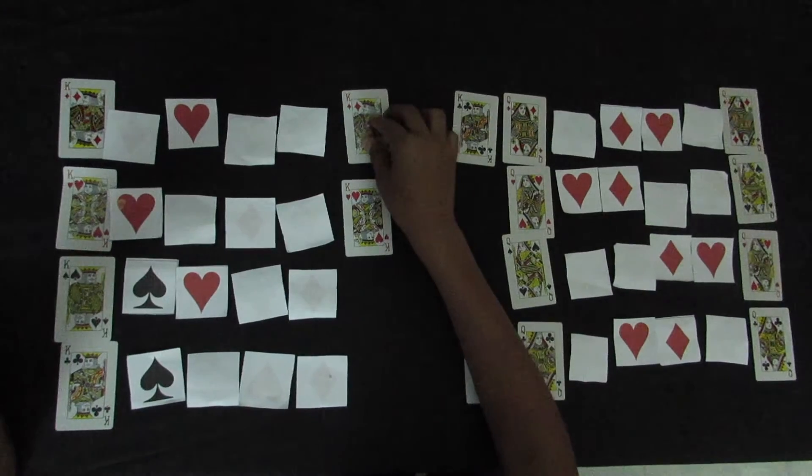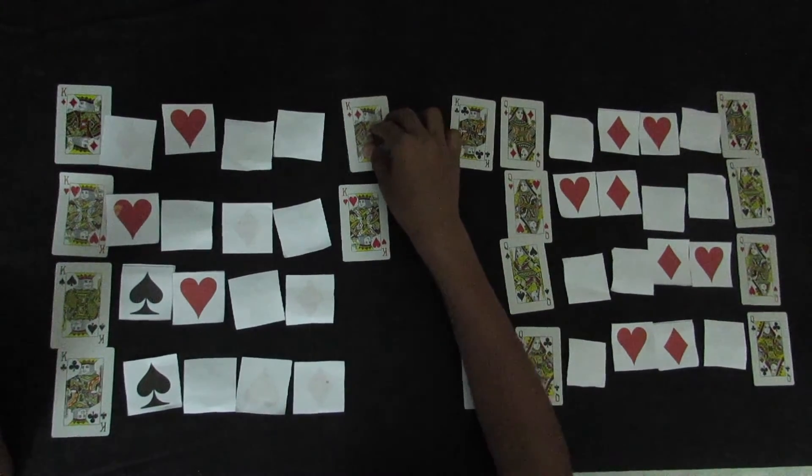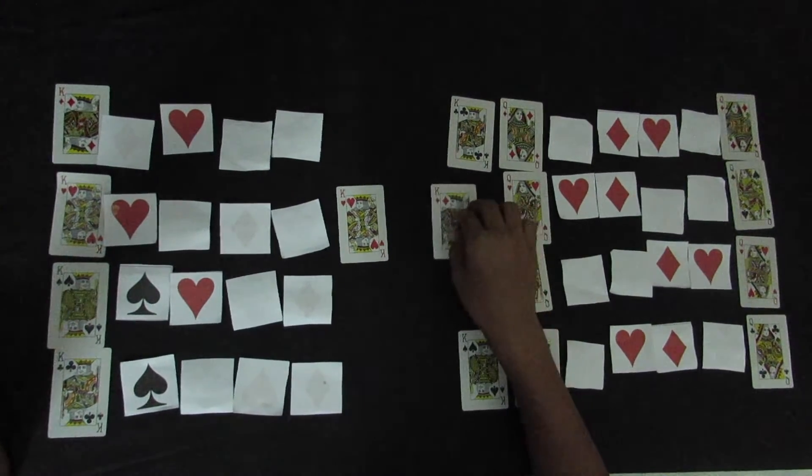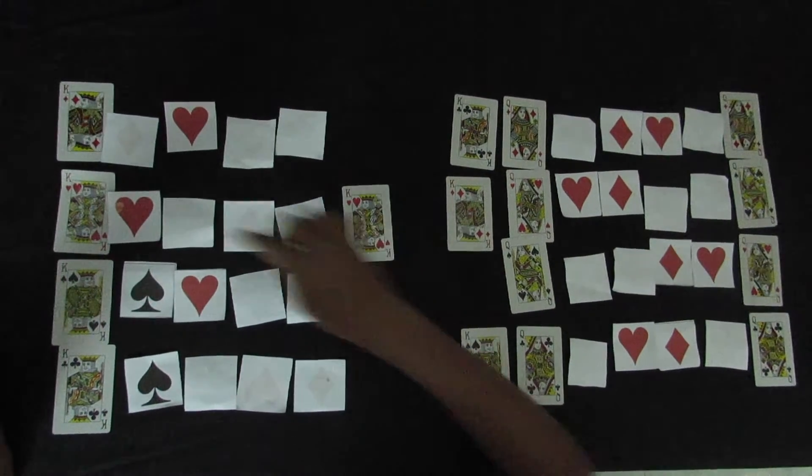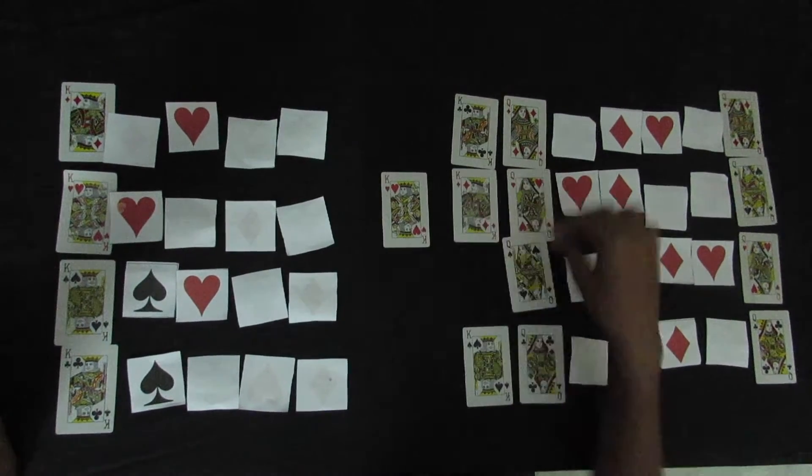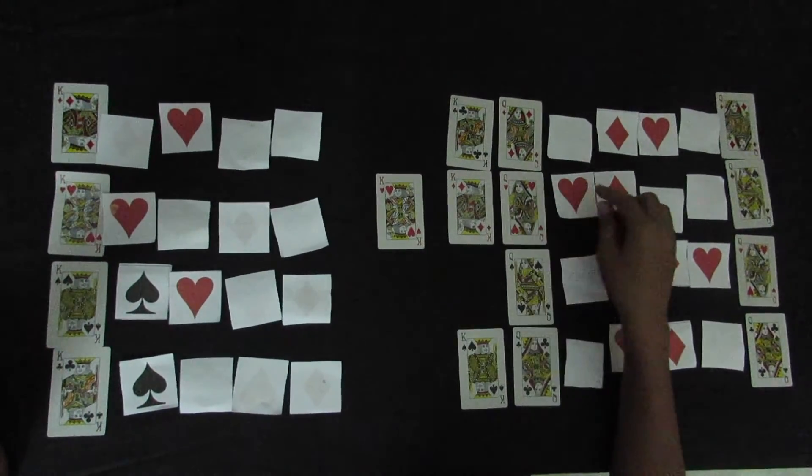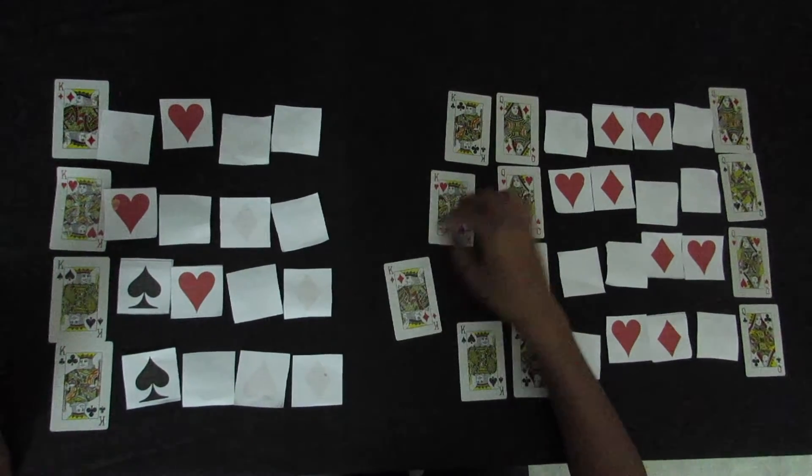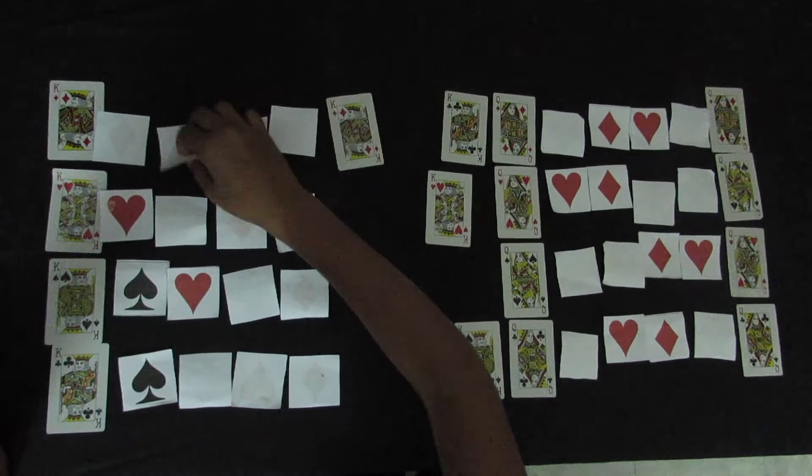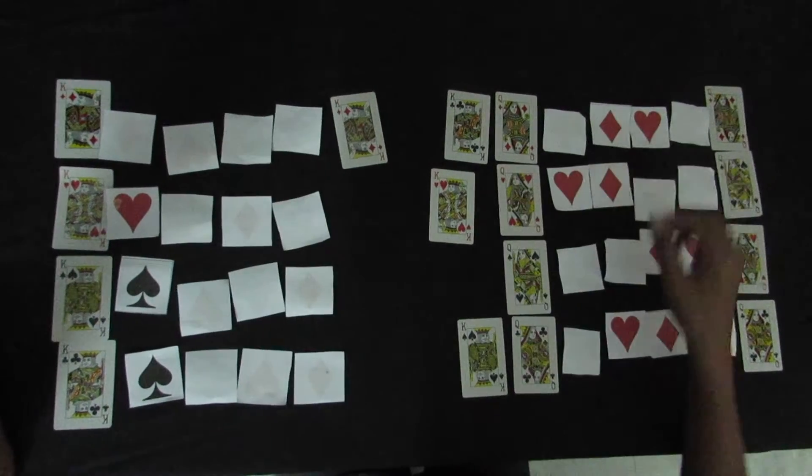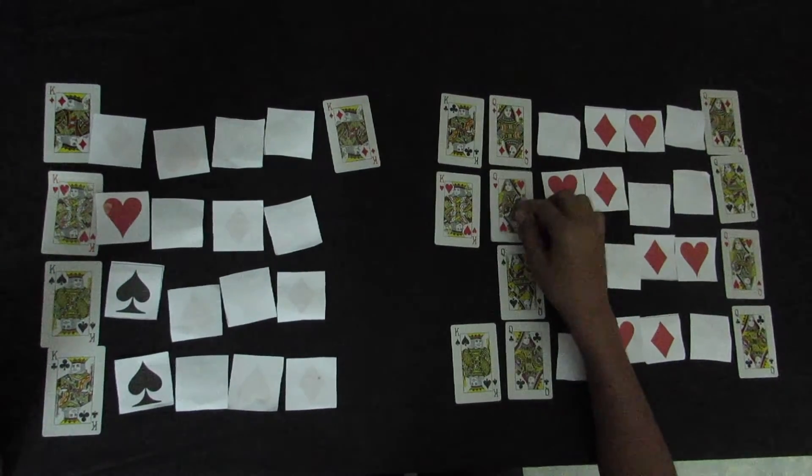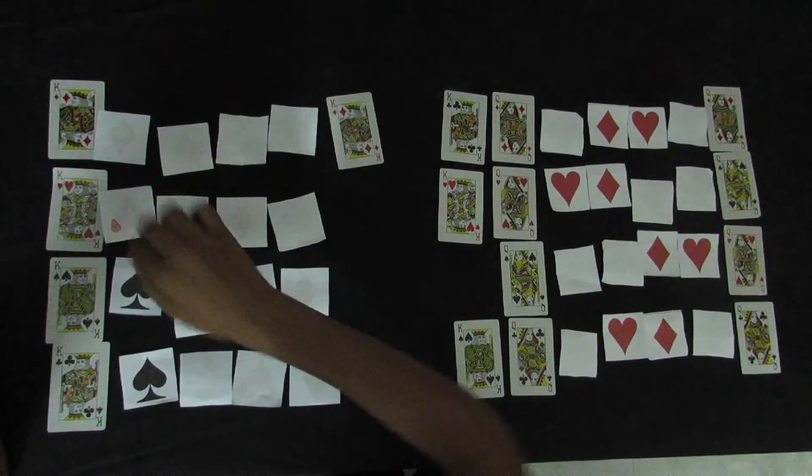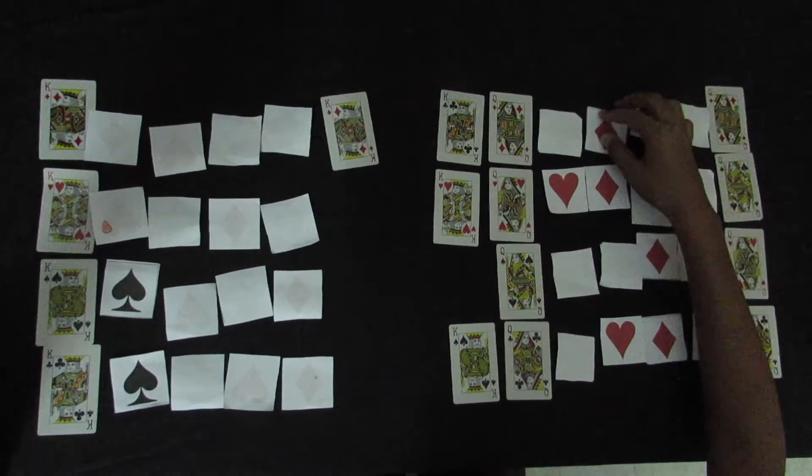Now, in the next round, the king of diamonds proposes to the queen of hearts. As we can see, the queen of hearts prefers the king of hearts over the king of diamonds, so he gets rejected. And now, in the third round, one more stable match is made. And now, the queen of hearts is no longer available, and over here, the king of hearts is no longer available.